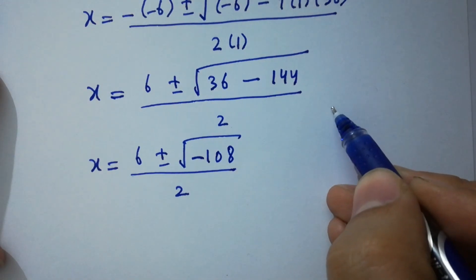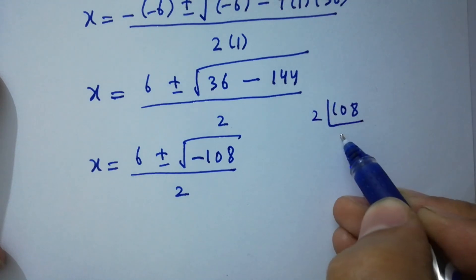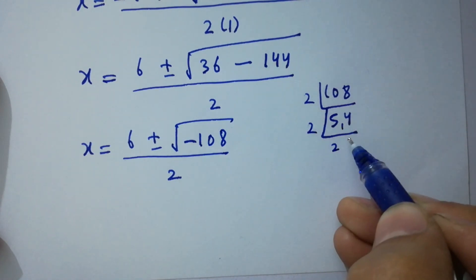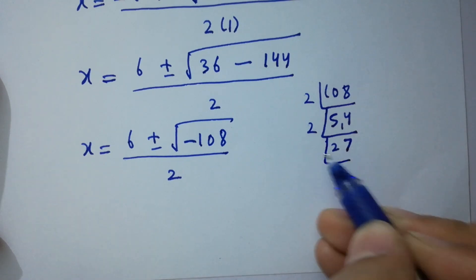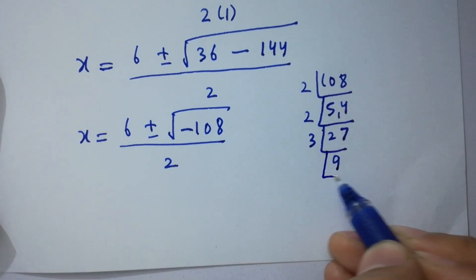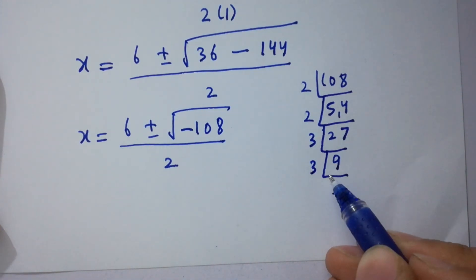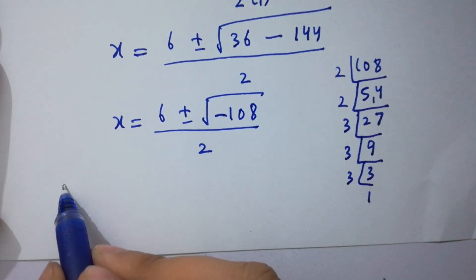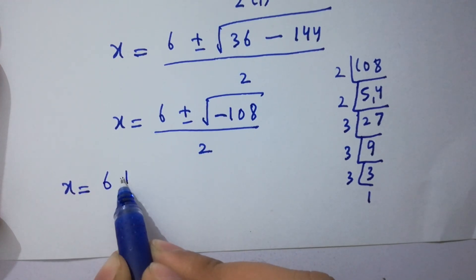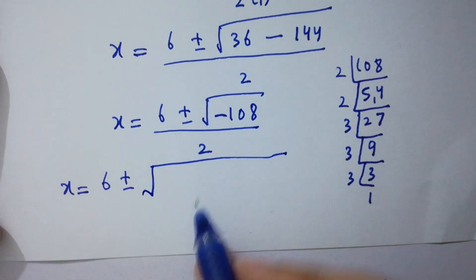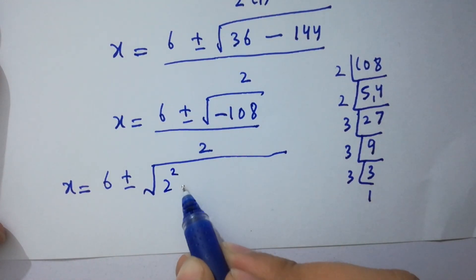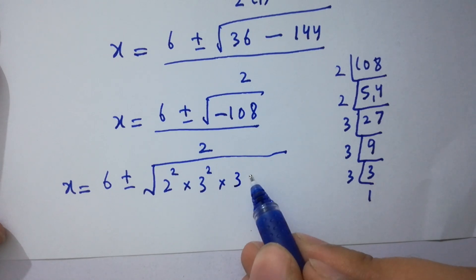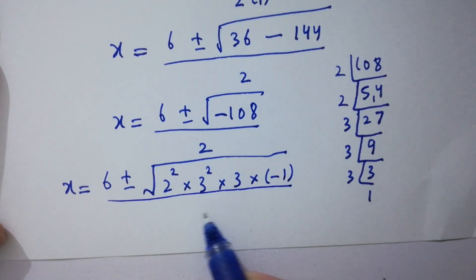Now, taking the factors of 108: we have 2 times 54, 2 times 2 times 27, 3 times 9 equals 27, and 3 times 3 equals 9. So the factors give us 108 equals 2 squared times 3 squared times 3. Therefore, x equals 6 plus or minus square root of 2 squared times 3 squared times 3 times minus 1, all over 2.